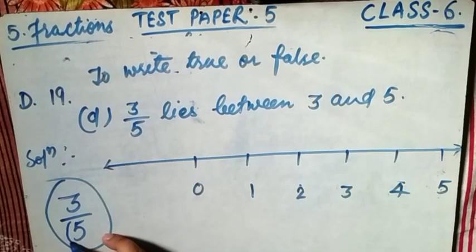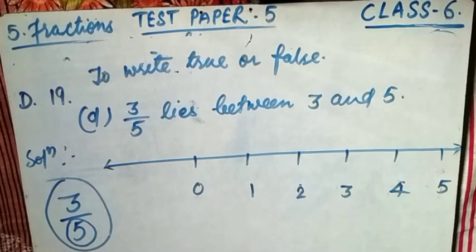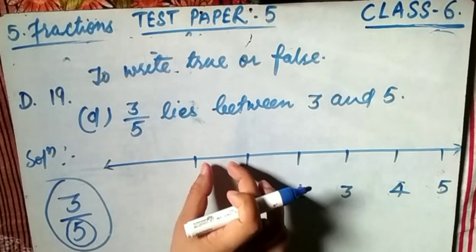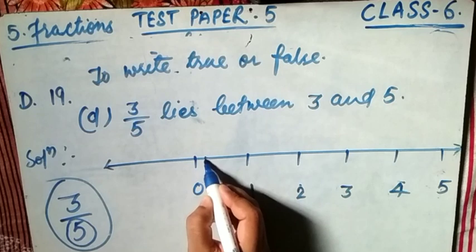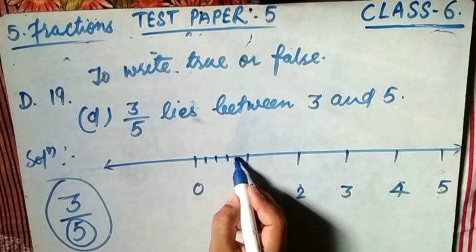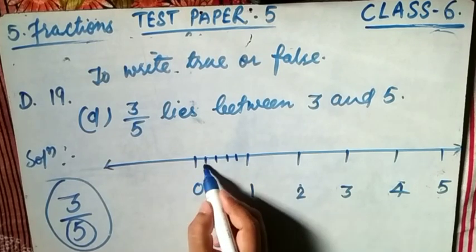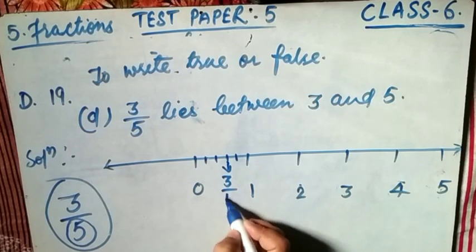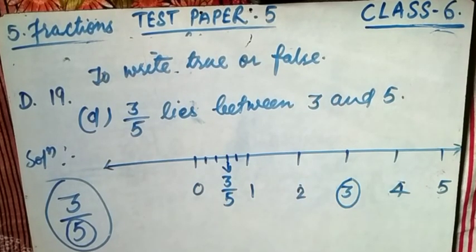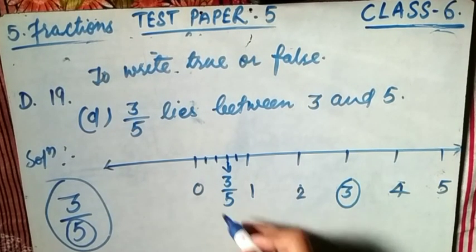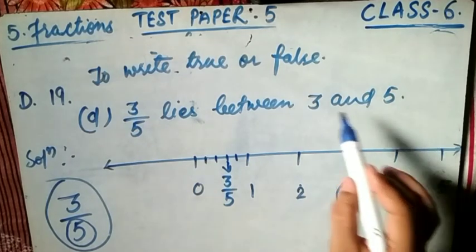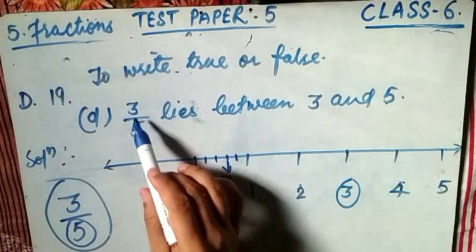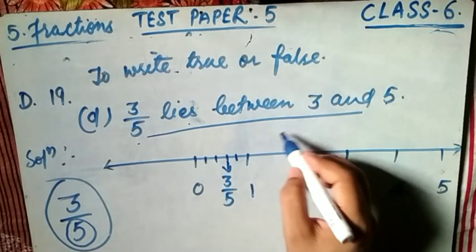Now represent 3/5 on the number line. The denominator 5 means divide each unit into 5 equal parts: 1/5, 2/5, 3/5, 4/5, 5/5 which is 1. So 3/5 falls between 0 and 1. Looking at the number line, 3 and 5 are very far from 3/5. Therefore, 3/5 does not lie between 3 and 5. This statement is false.